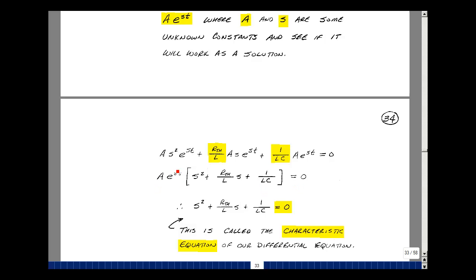Again, all this has to be equal to zero. Now since this is not identically zero, that means that this must be equal to zero. So I've got the term S squared, R thevenin over L times S, plus 1 over LC. This is also called the characteristic equation of our differential equation.